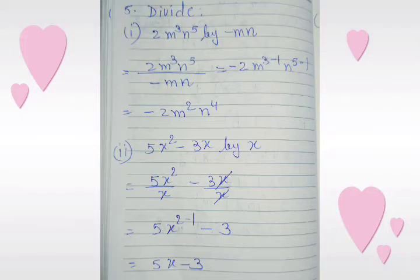Sub-part 2: 5x squared minus 3xy divided by x. We divide 5x squared by x and then minus 3xy by x. We get 5x to the power 2 minus 1 minus 3, so the answer is 5x minus 3.